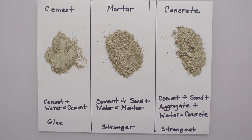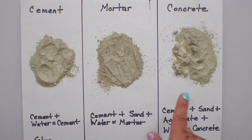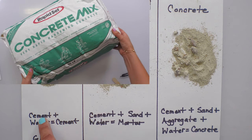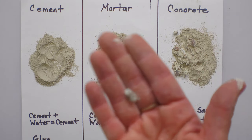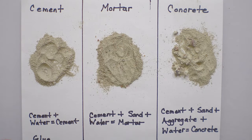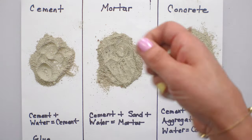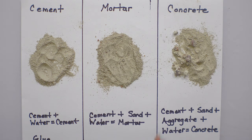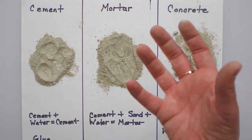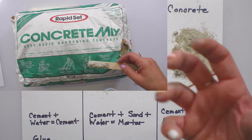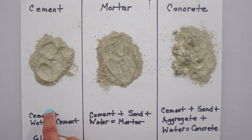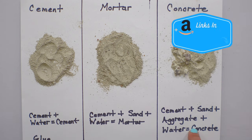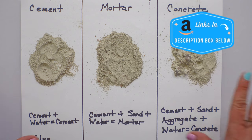Concrete is just cement plus sand plus aggregate. Aggregate can be anything — like these tiny little stones. You could use perlite, vermiculite; people use all kinds of different things as aggregate. It gives it an element that has strong pieces in it. Cement plus sand plus aggregate and water becomes concrete. This is the strongest medium, and all of these could be right for your application depending on what you're doing.